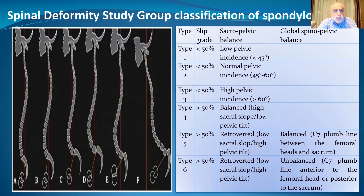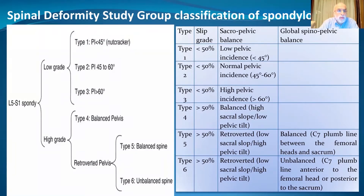The Spinal Deformity Study Group has a classification for spondylolisthesis into six types. These types depend on the degree of slip and its effect on the sagittal balance of the patient. L5-S1 spondylolisthesis can be either low grade — the first three types — with pelvic incidence either below 45, between 45 and 60, or above 60. The high grade can present with either a balanced or retroverted pelvis, with either a balanced or unbalanced spine.